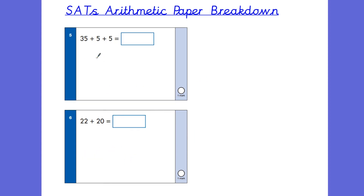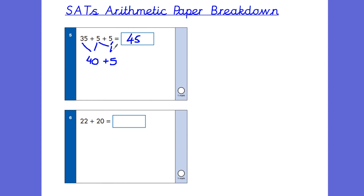Question 5 has 3 numbers to add, and I would suggest adding the 5s first — it's slightly adding but also slightly multiplying because it's like counting in 5s. So 35 add 5 is 40, and if we add another 5, we get 45. Another way is to ask the child to add both 5s together to make 10, and then 35 add 10 might be easier for them.